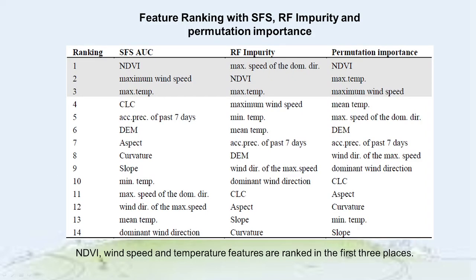Furthermore, in order to allow for a comparative ranking for all features, both numerical and categorical, three more feature ranking methods were employed utilizing the random forest algorithm. The selected algorithms for ranking were: sequential feature selection using the area under the learning curve as a score, ranking through node impurity, and permutation importance. The ranking results from those three algorithms are consistent with Spearman's correlation and show that NDVI, wind speed and temperature features are ranked in the first three places.